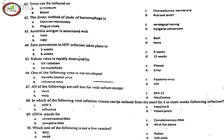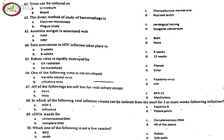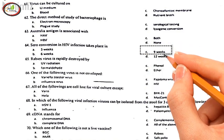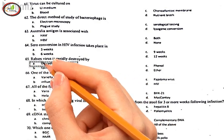61. Virus can be cultured on, C. Chorioallantoic membrane. 62. The direct method of study of bacteriophages, A. Electron microscopy. 63. Australia antigen is associated with, B. HBV. 64. Seroconversion in HIV infection takes place in, C. 9 weeks. 65. Rabies virus is rapidly destroyed by, A. UV radiation.